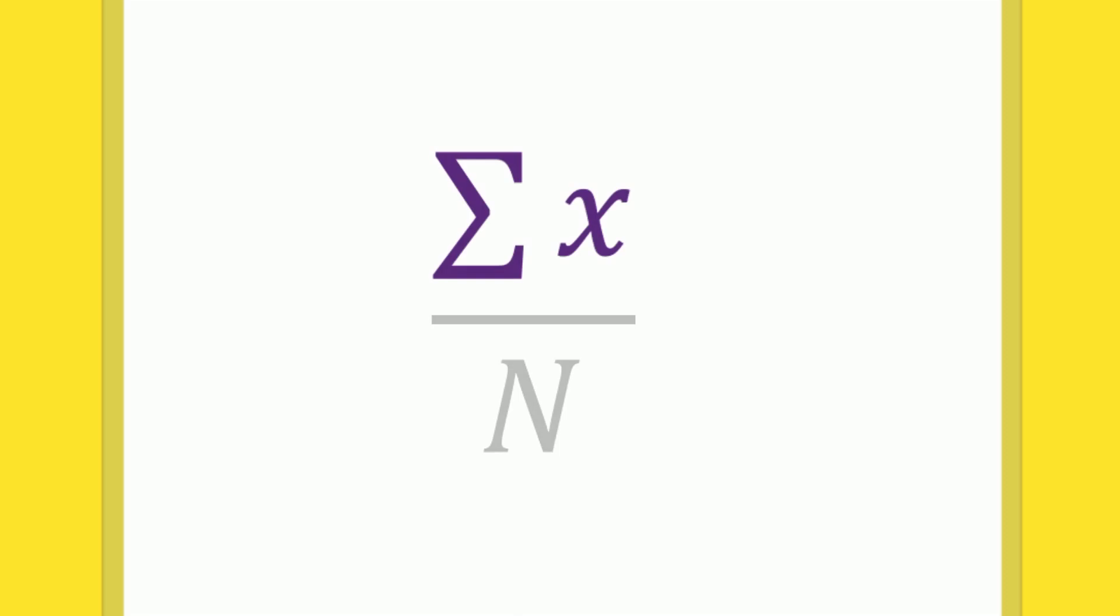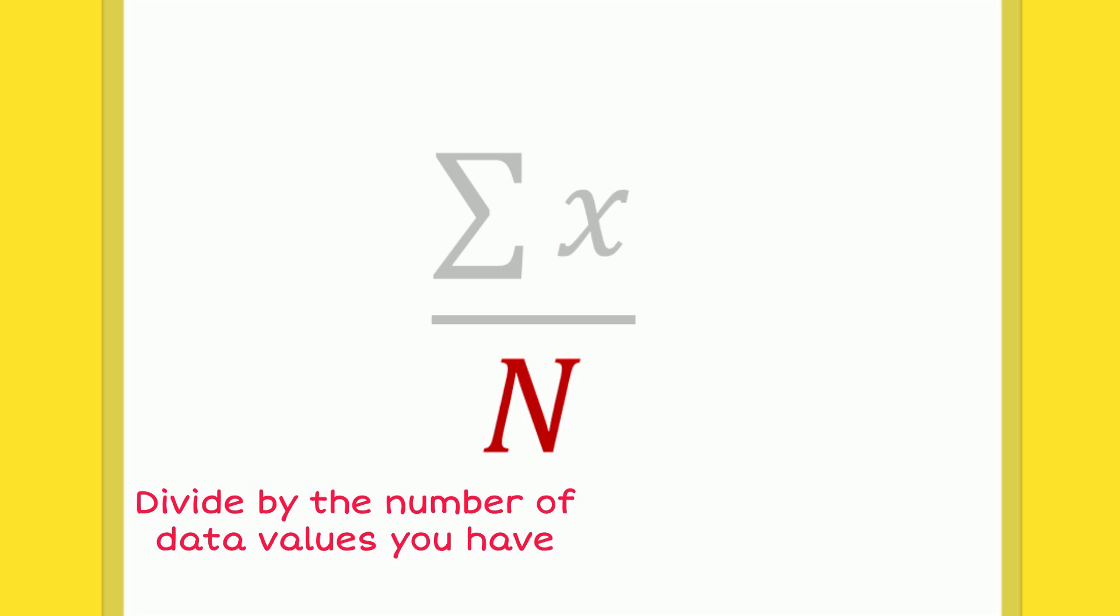This large E-looking symbol, or capital sigma, tells us we need to add all of our data together. This n on the bottom says we need to divide the total by the number of data points we have. Let's give it a try.